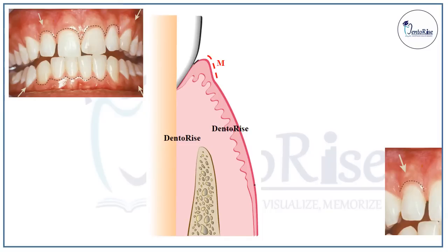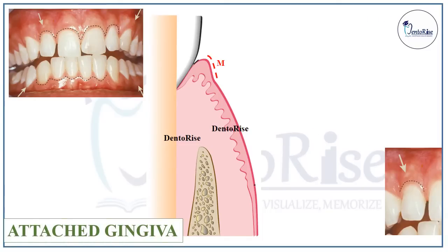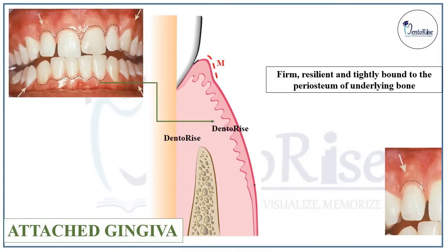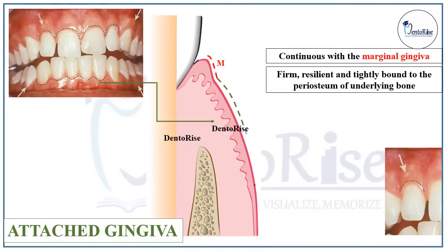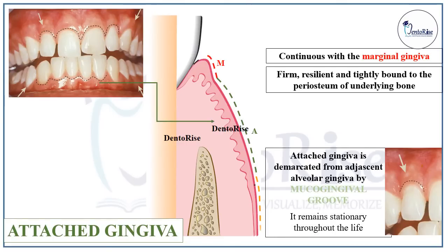The next type of gingiva is the attached gingiva. As the name suggests, attached gingiva is attached or tightly bound to the periosteum of the underlying bone. It is firm, resilient, and continuous with the marginal gingiva. It is demarcated from the marginal gingiva by the free gingival groove — marked in the figure with black dotted lines — and from the adjacent alveolar mucosa by the mucogingival groove, marked in the figure with green dotted lines.